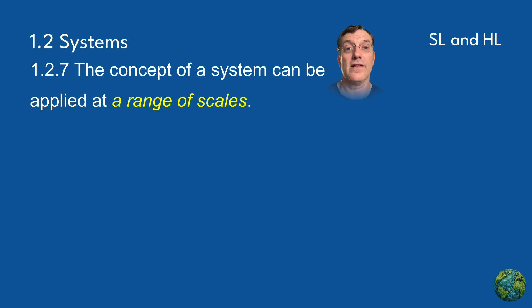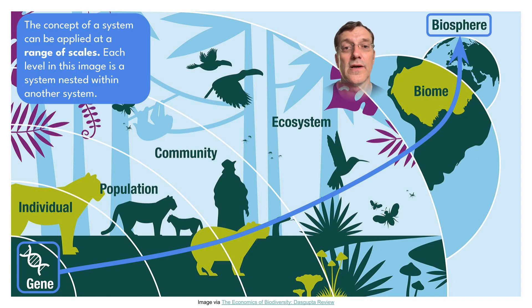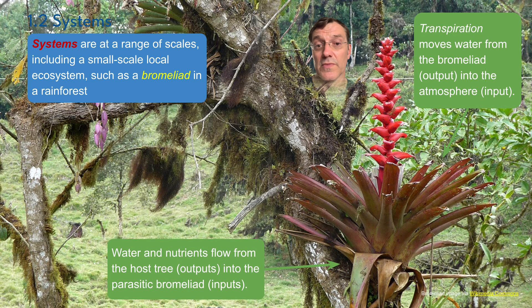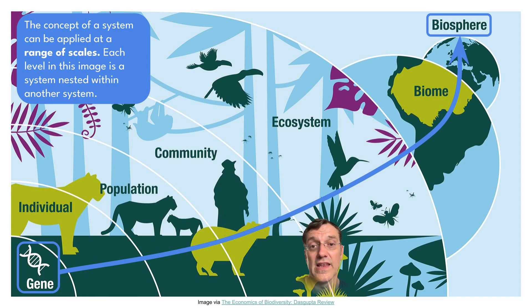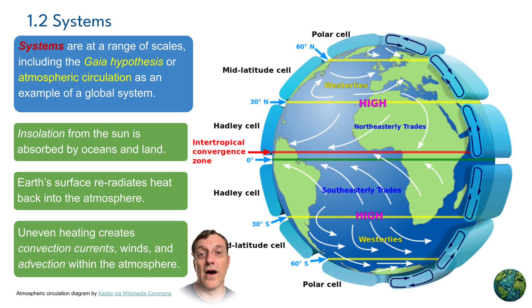The concept of systems can be applied across a whole range of scales, from microscopic to global. At the smallest scale, a single cell is a system with organelles working together to maintain life. Zooming out, an individual organism like a tree is a system of interconnected parts. Further still, we encounter ecosystems — perhaps a small pond or a vast rainforest — each nested within even larger systems: biomes, continents, and ultimately the entire biosphere of Earth. Understanding how systems operate at different scales is crucial in environmental science, because it allows us to see how local changes can have global impacts, and vice versa.